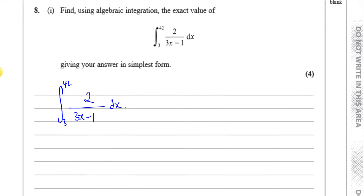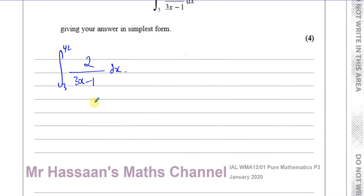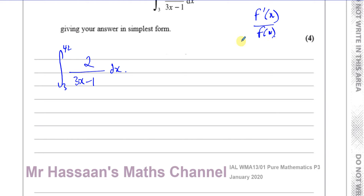Now this is a type of integral of the form 1 over a linear function. This is the type that uses the reverse of the chain rule, and it's going to involve ln, because it's like the differential of something divided by the original function. The numerator is of the form of the differential of the denominator.